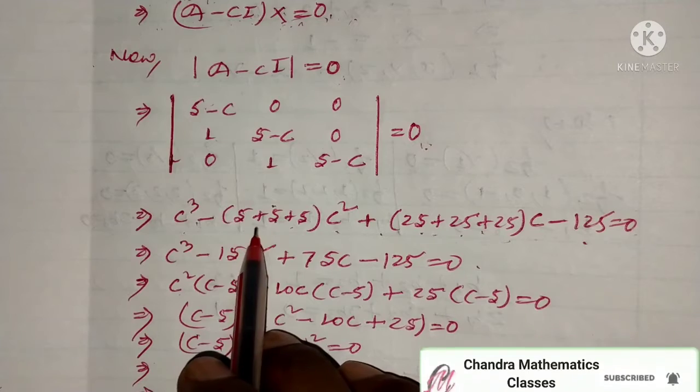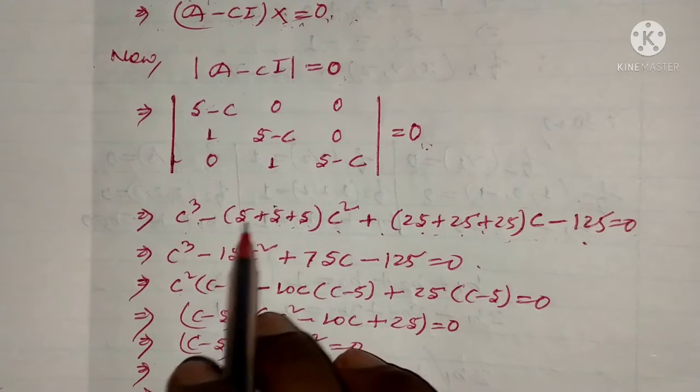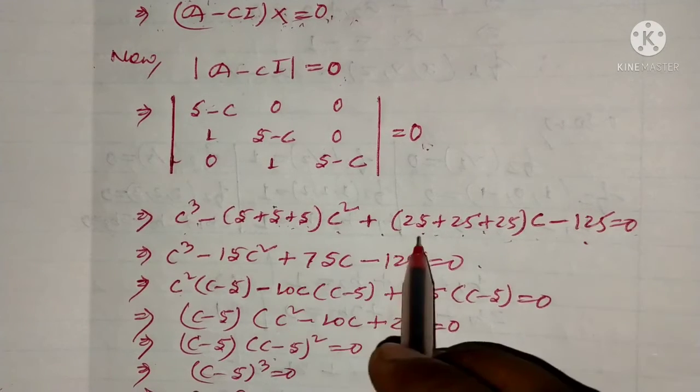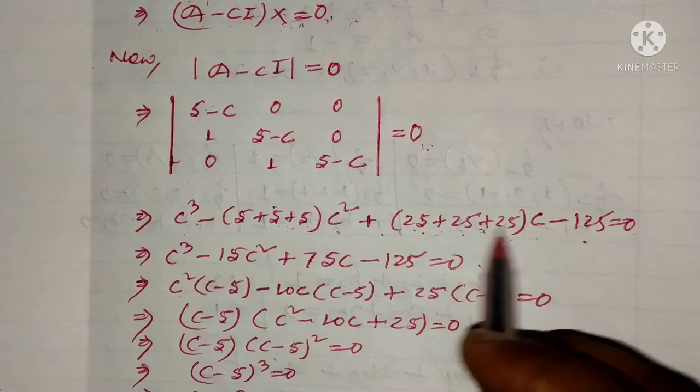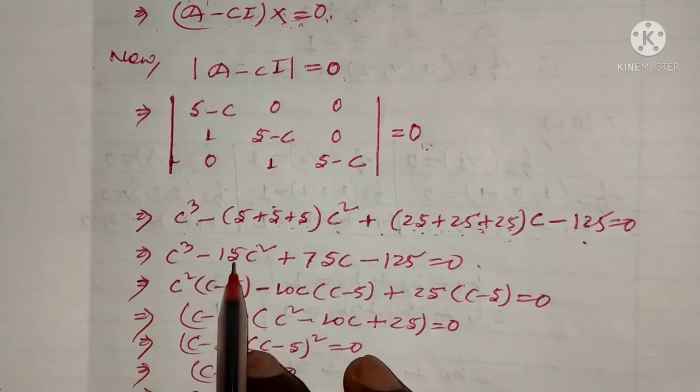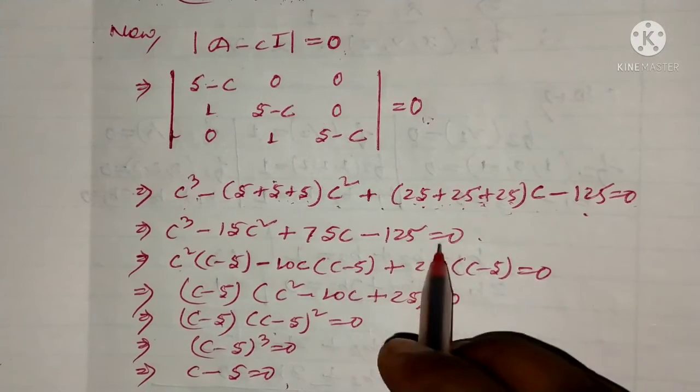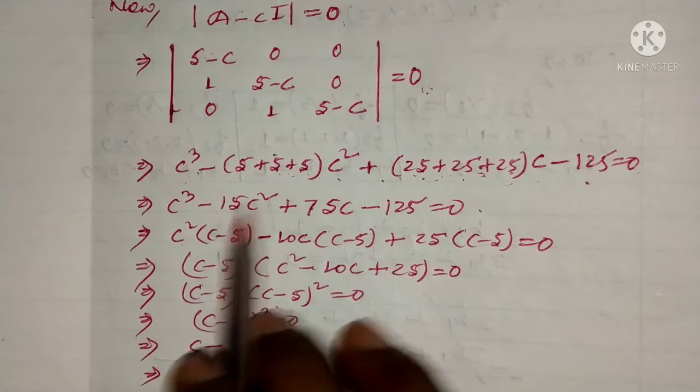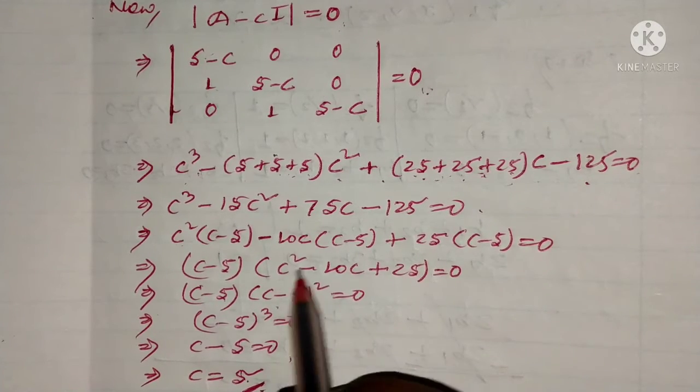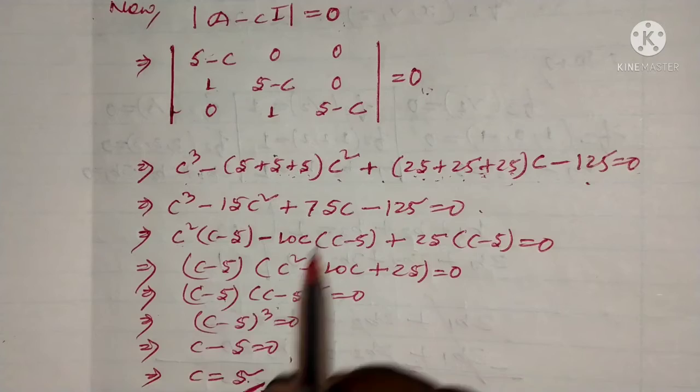Then c cubed minus the sum of diagonal entries which is 5 plus 5 plus 5, times c squared, plus sum of minors of diagonal entries which is 25 plus 25 plus 25, times c. So we get c cubed minus 15c squared plus 75c minus 125 is equal to zero. Now we see if we put c equals 5, the value becomes zero.